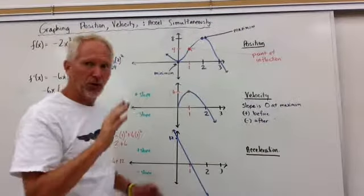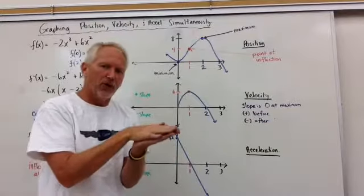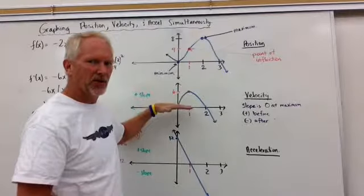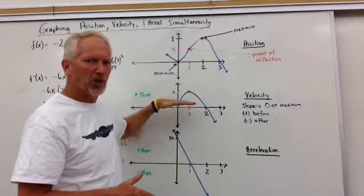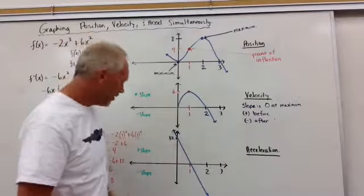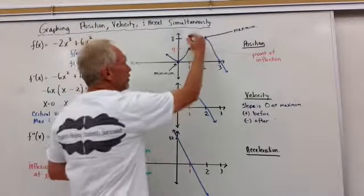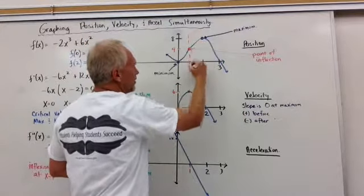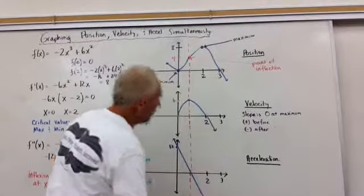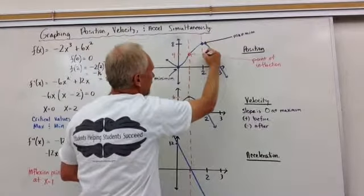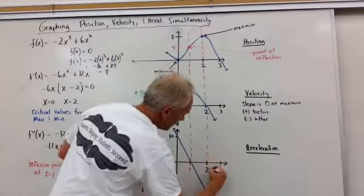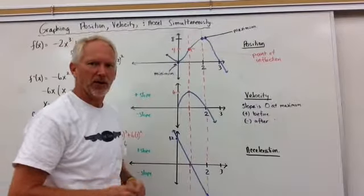Now how does that translate to the velocity function? Well, remember the velocity function, whenever we have something above the x-axis, then what that means is that the derivative or the slope is positive. When we have something below the x-axis, then the slope is negative. So what I like to do is I like to just draw my dashed lines through these values all the way down, and we'll see how they match up. 2 is another value all the way down through 2, straight down. And let's see how we can break this piece apart.